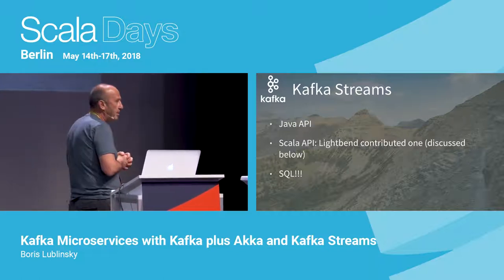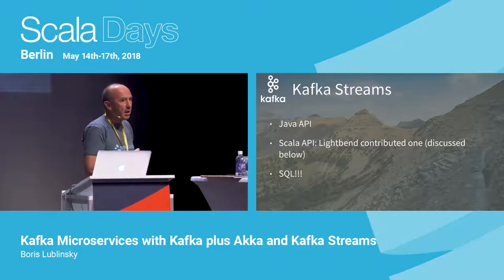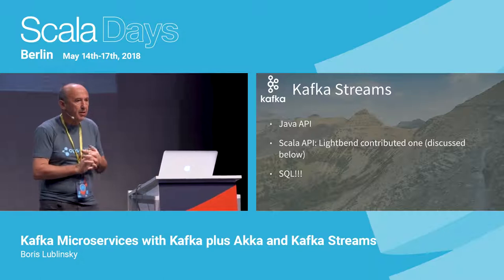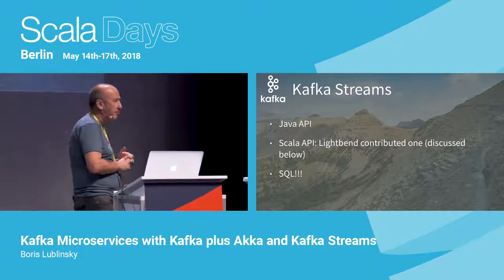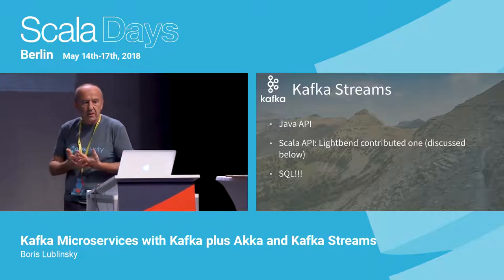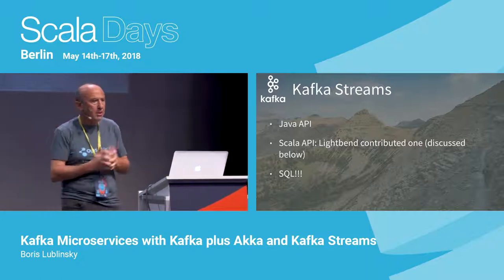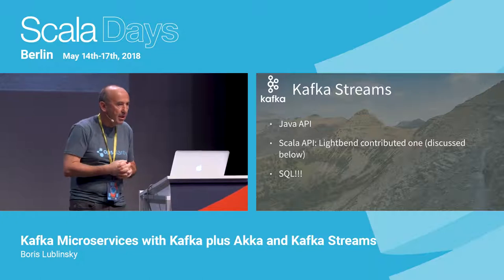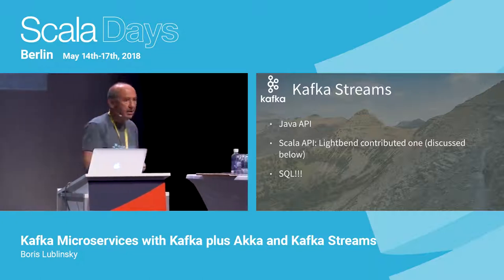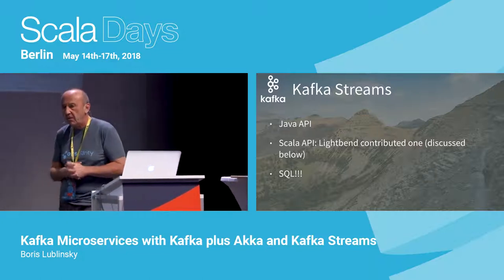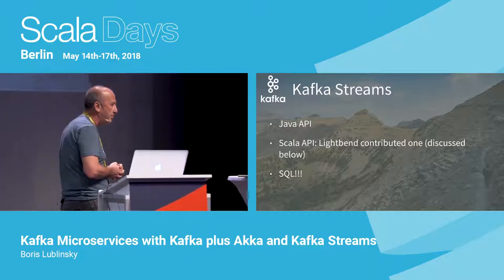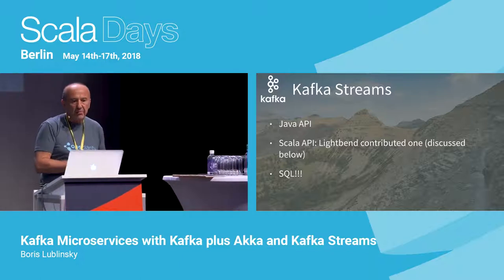Kafka Streams and Confluent made a very specific decision: the only API they provide is a Java API. At that point, Lightbend came to the rescue and created Scala APIs for Kafka Streams, which I'll talk about in more detail later today.